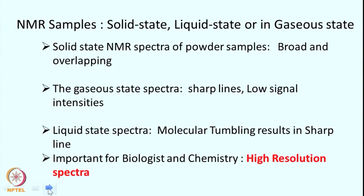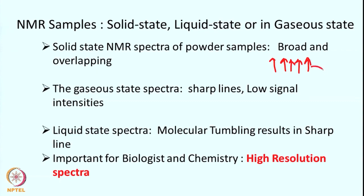What kinds of samples can we look at in NMR? All sorts — ranging from solid state, liquid state, or gaseous state. In solid, the powder sample generally gives broad and overlapping lines because the spins are arranged very close to each other. Each spin has its own resonance frequency, and the resultant is a very broad line that gives limited information.